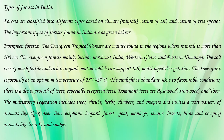Due to the favorable conditions, there is dense growth of evergreen trees. Dominant types of trees are rosewood and ironwood. This multi-story vegetation includes all types of plants — trees, shrubs, herbs, climbers, and creepers. There is a vast variety of animals due to the availability of varied trees, such as tiger, deer, lion, elephant, leopard, forest goat, monkeys, lemurs, insects, and birds. Creepers invite species like lizards and snakes, while monkeys and lemurs are present because of the vast variety of fruit-bearing trees.